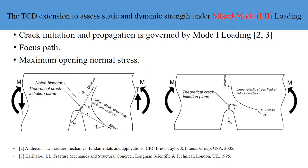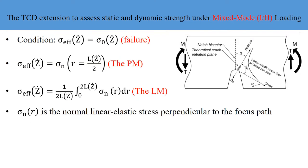Recalling from the previous slide, the variables representing Z-dot: the displacement rate is calculated from the displacement oriented in parallel to the focus path, and the opening normal strain rate is calculated from the resulting maximum opening normal strain. The TCD method is reformed accordingly by introducing the Z-dot variable to the TCD failure condition. The effective stress is computed from the generated linear elastic stress field at failure condition along the focus path.